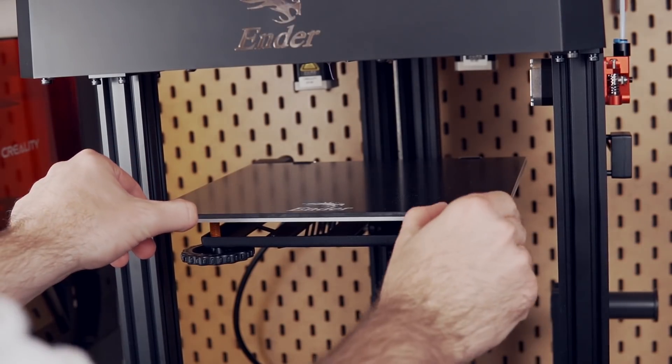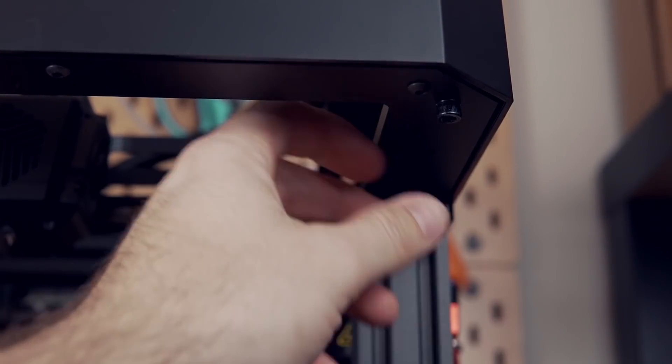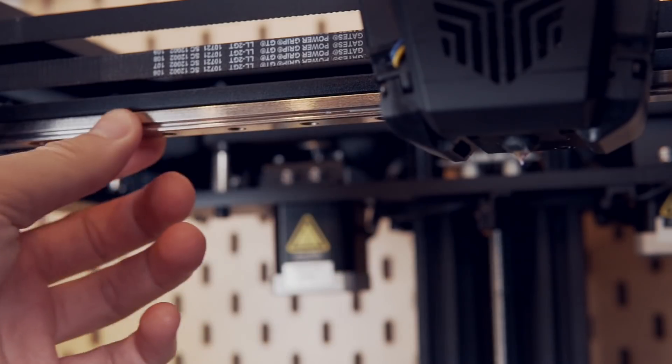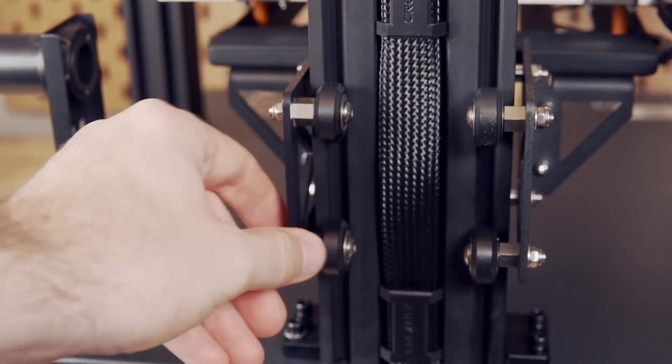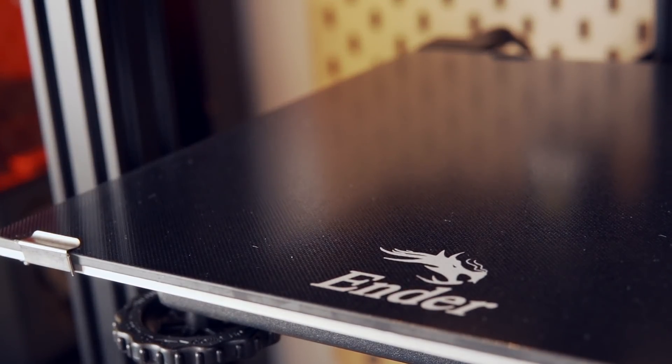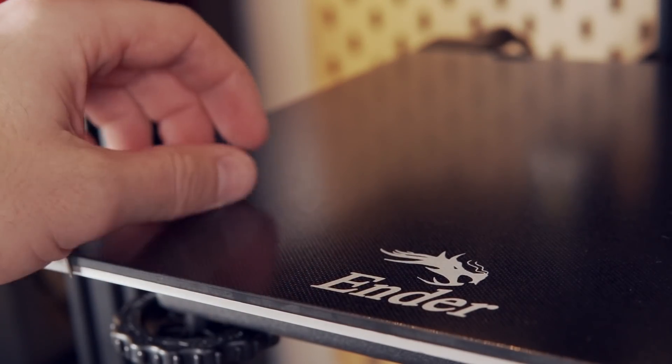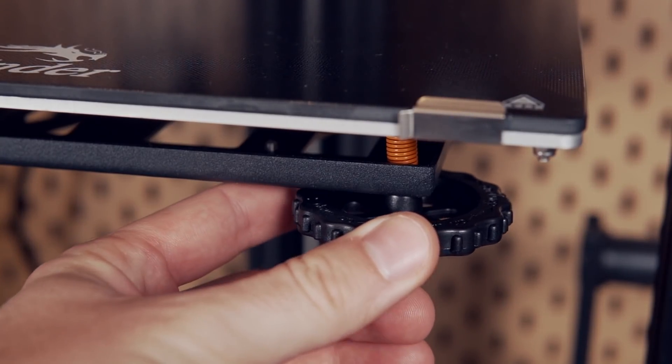The machine is primarily constructed of three beefy aluminum extrusion pillars with a steel frame on top for the motion system. The X and Y axis uses linear rails while the Z axis on the bed uses V-slot wheels and rides up and down on a single lead screw. The bed is made of the glass ultra-base bed found on many current Creality printers and has manual bed leveling with four large knobs on each corner.